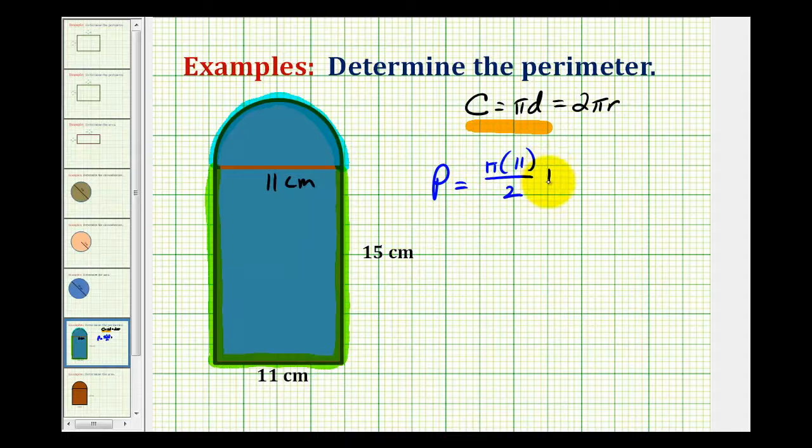Plus the length of the three sides. So if this is 15 centimeters, so is this. So we'd have two times 15 centimeters plus 11 centimeters.